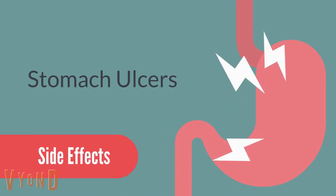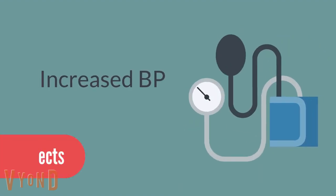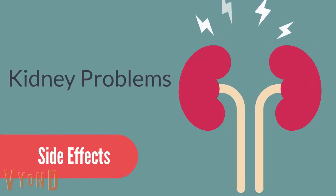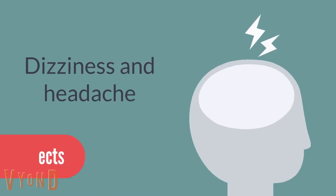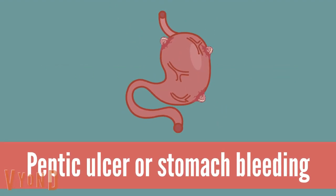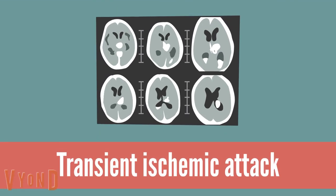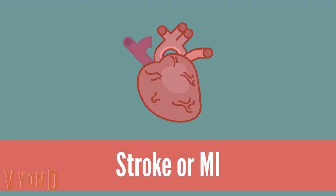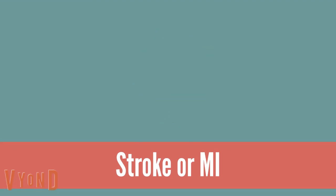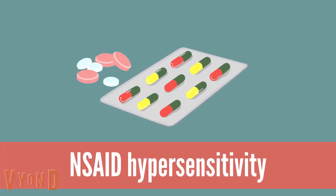NSAIDs side effects include stomach ulcer or heartburn, increased blood pressure, kidney problems, and dizziness or headache. NSAIDs are contraindicated in patients with peptic ulcer or stomach bleeding, uncontrolled hypertension, history of transient ischemic attack, stroke, and myocardial infarction — excluding aspirin of course — in the third trimester of pregnancy, and if the patient has known hypersensitivity.